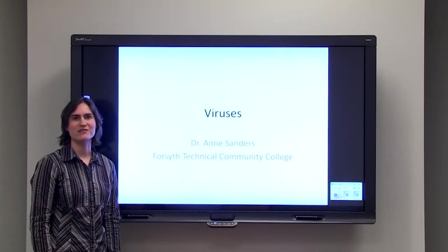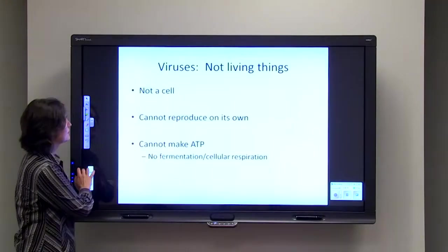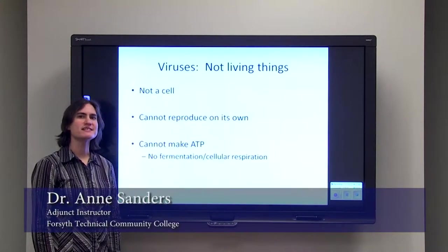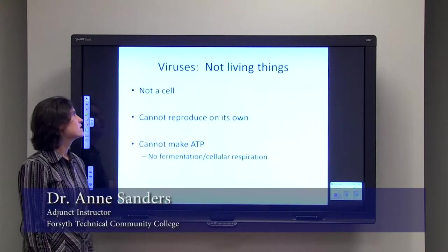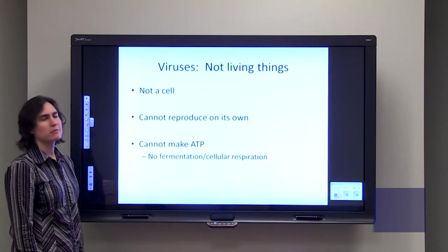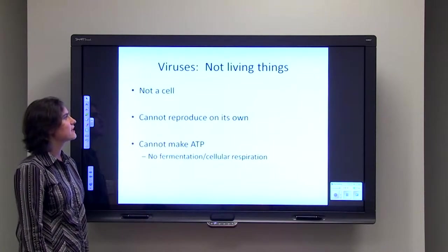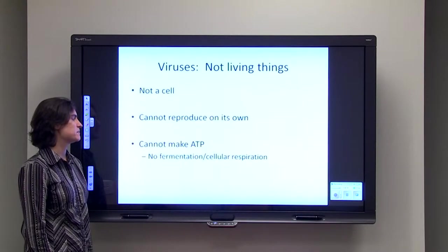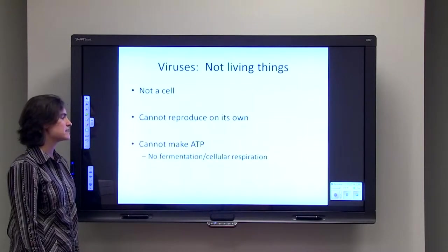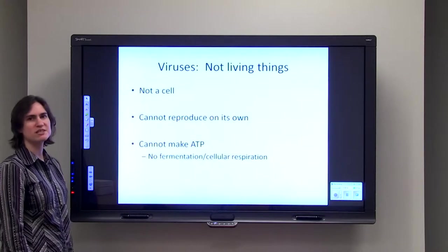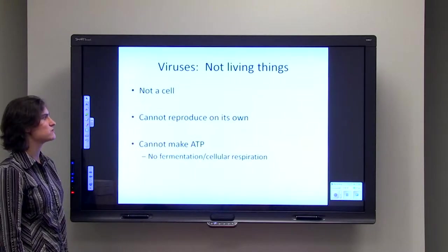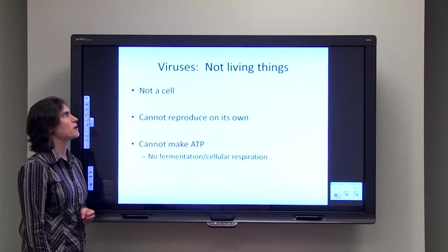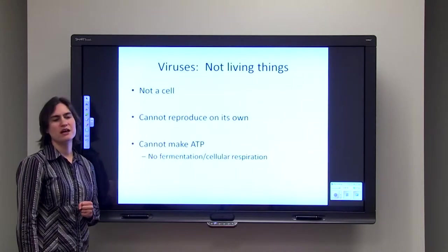Today we're going to be talking about viruses. First, let's talk about what a virus is not. A virus is not a living thing, so a virus is not made up of a cell. A virus cannot reproduce on its own and a virus cannot make ATP because it doesn't have the enzymes and materials to do fermentation or cellular respiration. So because of these three reasons, a virus by the definition of living things is excluded.